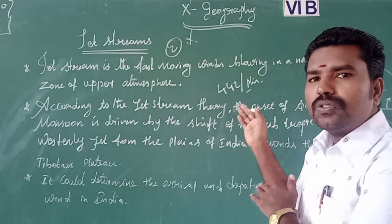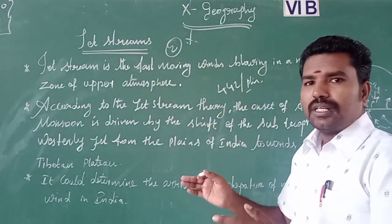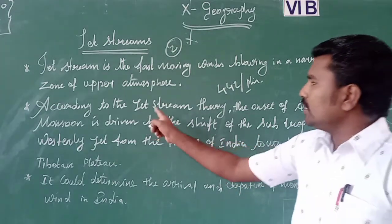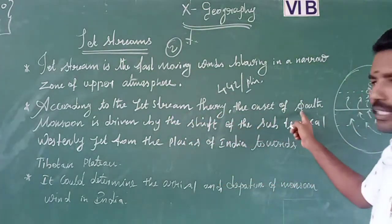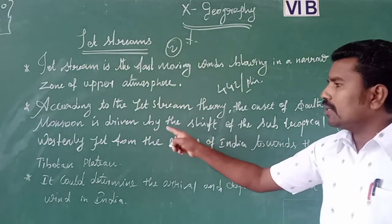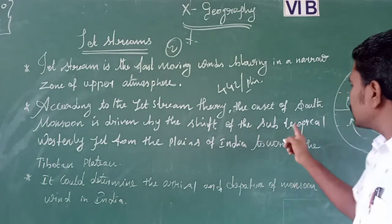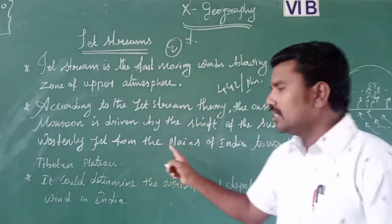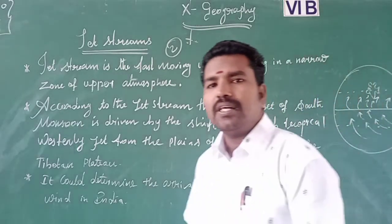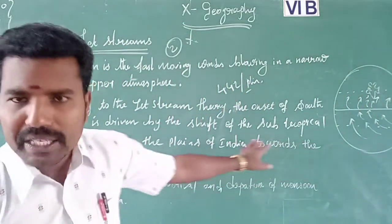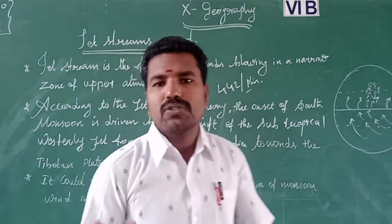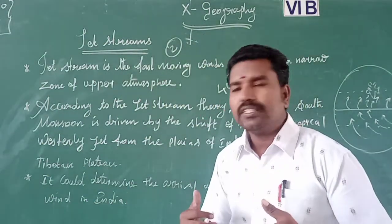According to the jet stream theory, the onset — the beginning — of the southwest monsoon is driven by the shift of the subtropical westerly jet from the plains of India towards the Tibetan plateau. The third point is not given in the book; it is a very important extra point.